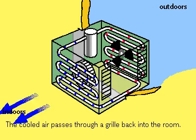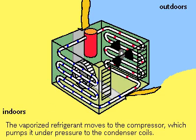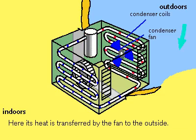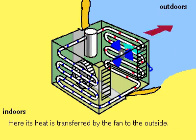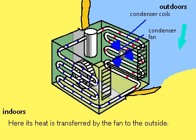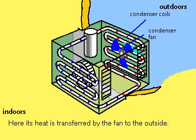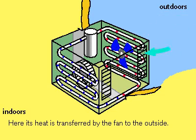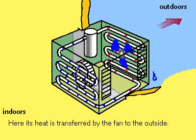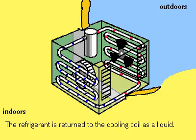The refrigerant gas is then compressed, increasing its temperature. To return to a liquid state, the refrigerant must give up its heat. The heat transfer is accomplished by having outdoor air blown through the condenser coils containing the compressed gas, thus cooling the gas and transforming it back to a liquid, which is then returned to the cooling coils.